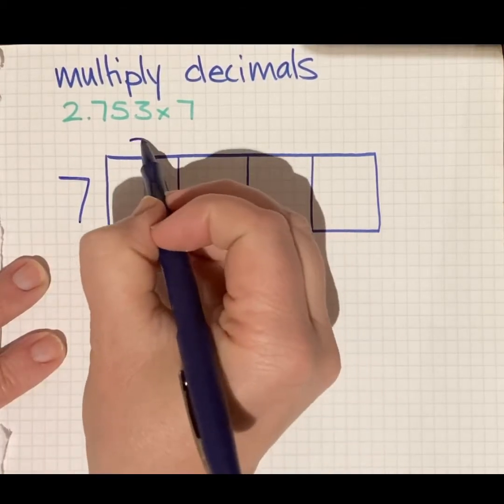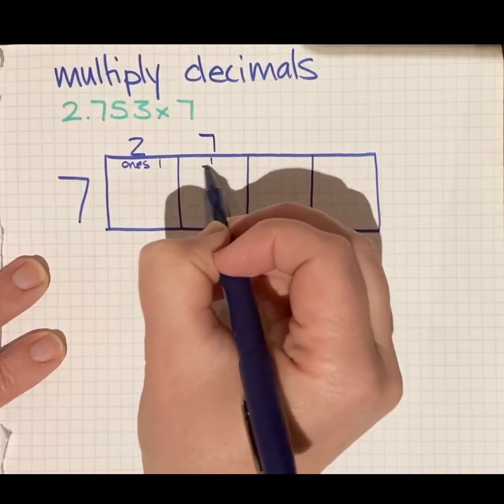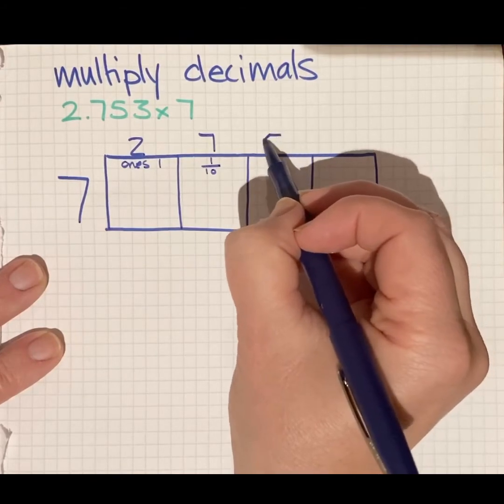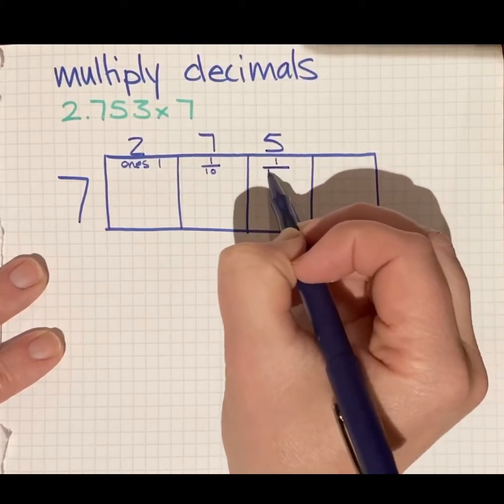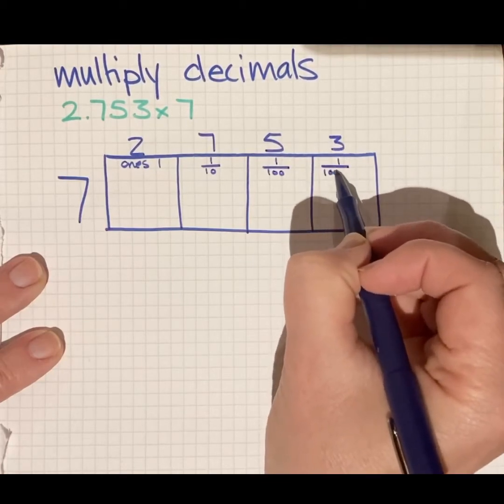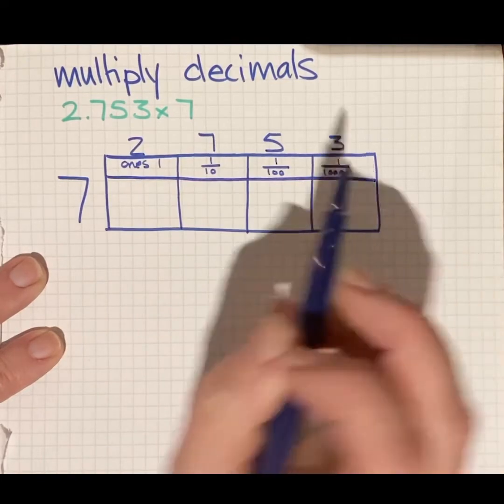So I have two ones. I have seven tenths. I want to see this in the fraction form, not the long word, please. Five hundredths and three thousandths. You'll notice I've kind of started to line them up a little bit. That'll make sense in a moment.